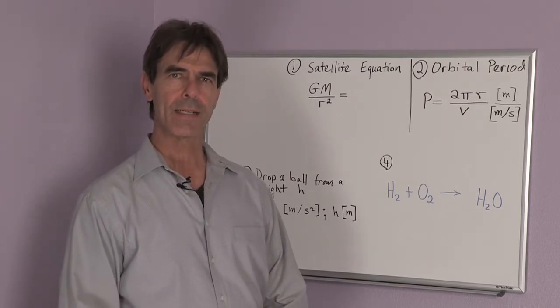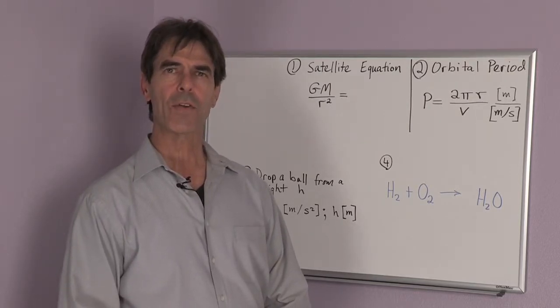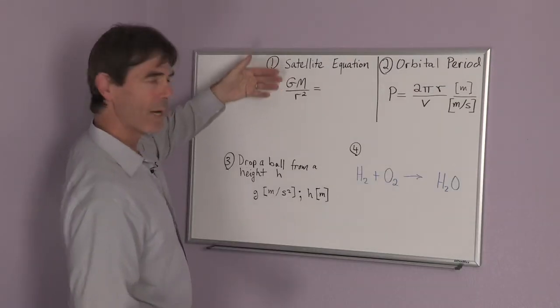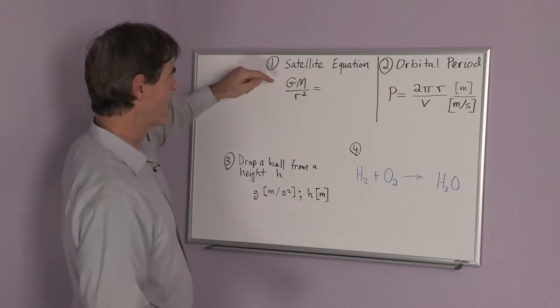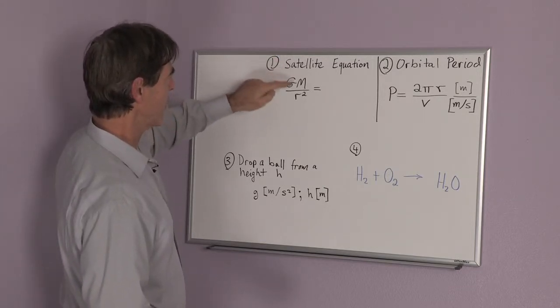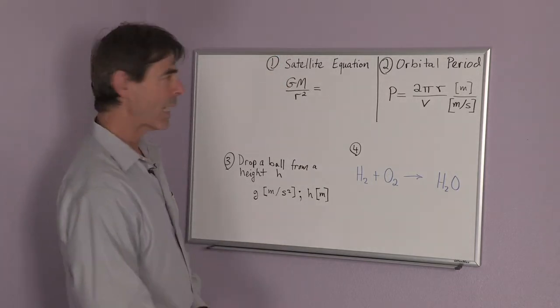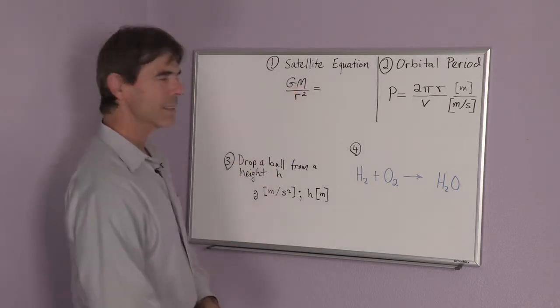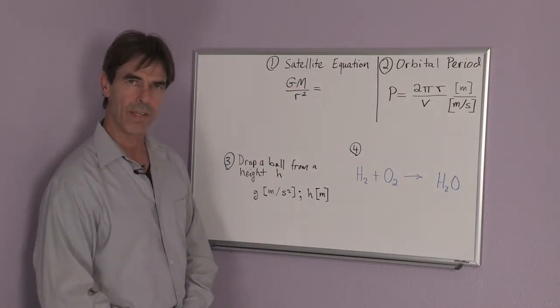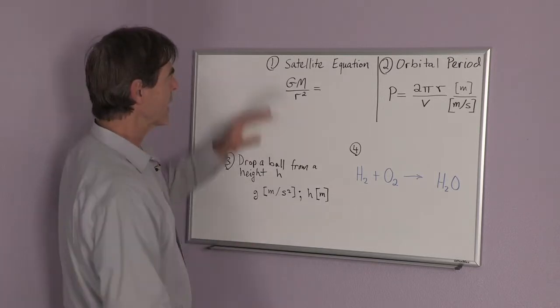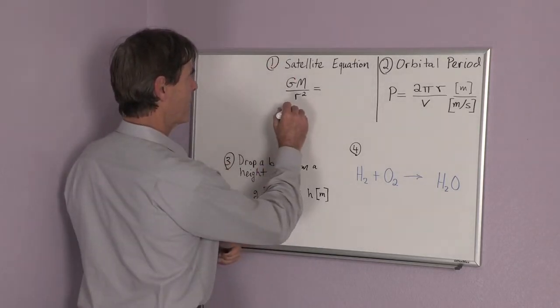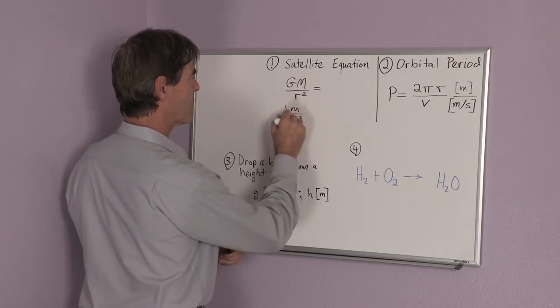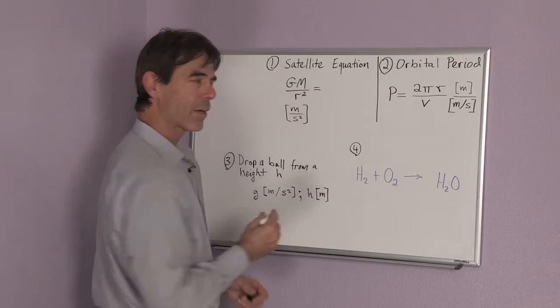But there is a trick to know if you're on the right track, if you've got the equation close. The force on a satellite, the gravitational force from the Earth, is the gravitational constant G, capital G, times the mass of the Earth divided by the distance of the satellite from the center of the Earth squared. This has units of meters per second squared. It's an acceleration.